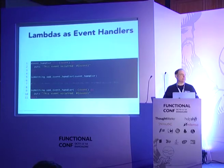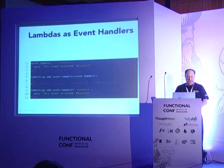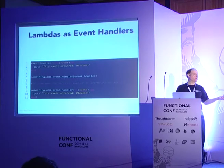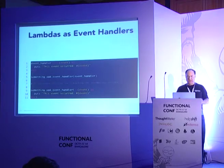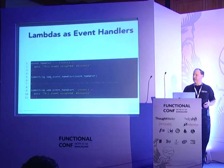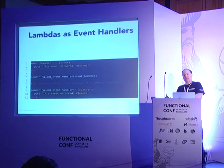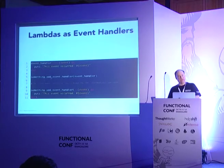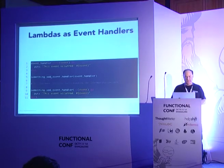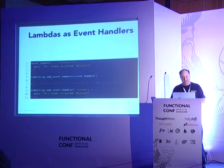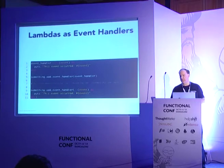Lambdas are natural for event handlers. Here, I'm defining an event handler that when called with an event will output a string saying the event occurred, and then we can pass that to a method called add_event_handler. Lambdas are first-class objects — we can pass them around and they can be held onto for later use and called. We can make this even more concise by defining a lambda right there without even using an intermediate variable.